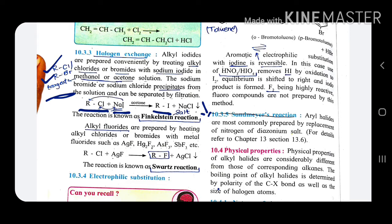Another reaction is Swart's reaction. It has alkyl fluoride, that is RF. To prepare alkyl fluoride, alkyl fluoride is prepared by heating alkyl chloride or alkyl bromide with the help of metal fluoride such as AgF, Ag2F2, AsF3, or SbF3. For Swart's reaction, remember it is for fluorine.